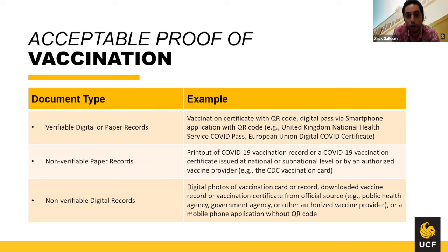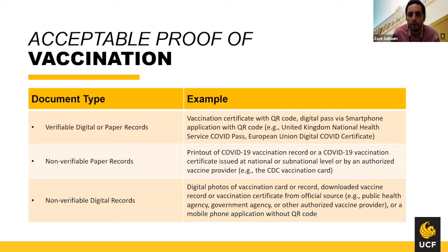How can you show proof of vaccination? What will airlines and airports look for? You can show a QR code through a mobile app — a verifiable digital record — a paper record such as a COVID vaccination card with a signature and stamp from a medical provider, or a non-verifiable digital record such as a photo of a vaccination card or a downloaded vaccination record from an official source like a doctor's office or government agency.